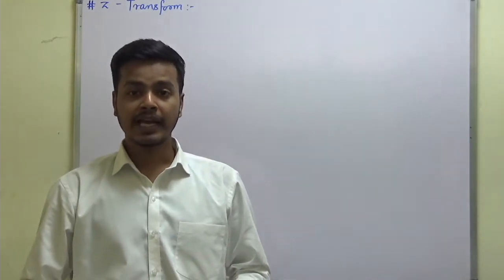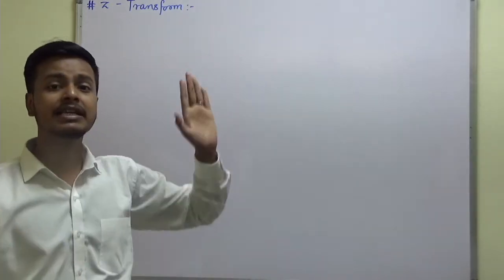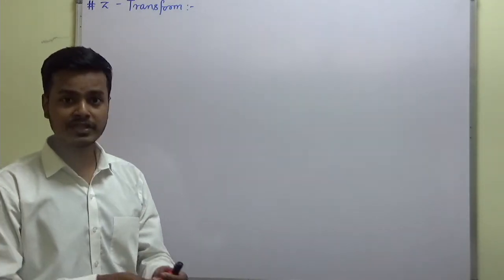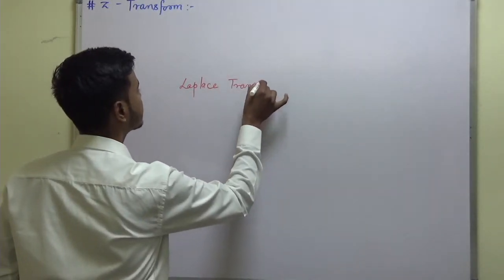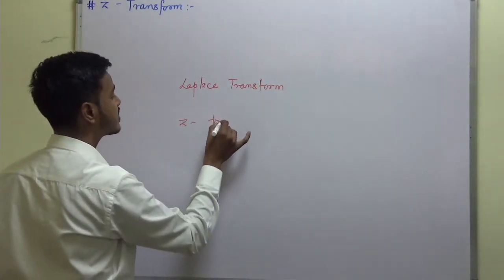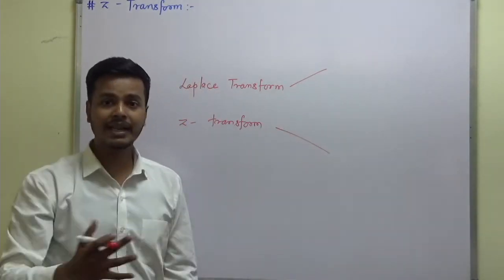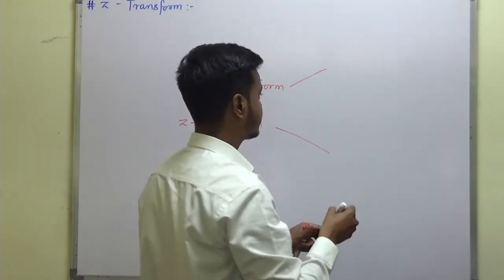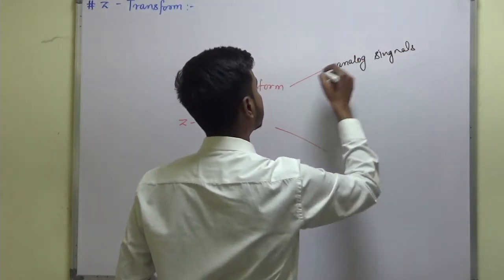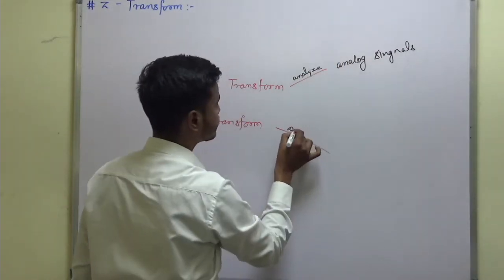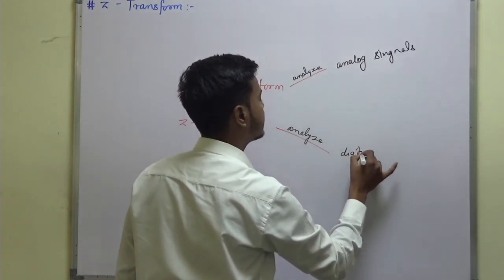Z-transform is mainly used to analyze digital signals and process digital data like MP3 files, MP4 files, JPG images, ZIP files, and so on. Earlier we saw the Laplace transform, and now we are going to learn Z-transform. The Laplace transform is used to analyze analog signals, whereas the Z-transform is used to analyze digital signals.